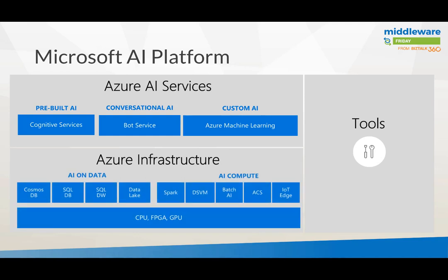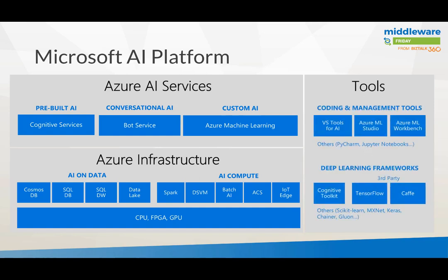Beneath it, you find the Azure infrastructure. That can be AI on data, which includes some of the data capabilities within the Azure platform — whether it be Cosmos DB, SQL, or Data Lake. You can have compute with Spark, Batch AI, IoT Edge, and Azure Container Services, leveraging bare metal CPUs and GPUs available in the Azure platform. For tooling, you have Visual Studio tools for AI, the Azure Machine Learning Workbench, or third-party deep learning frameworks like TensorFlow or Caffe. This gives you the overall picture of the Microsoft AI platform.